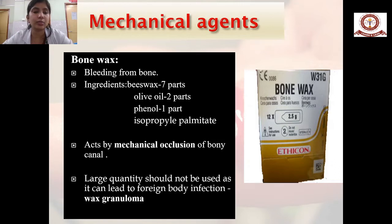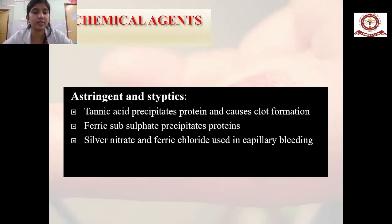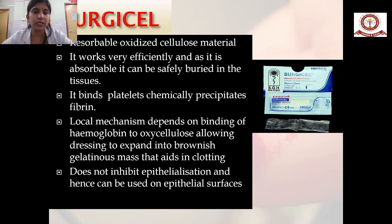Bone wax arrests bleeding from bone; its composition includes beeswax, olive oil, phenol, and isopropyl palmitate, and it acts by mechanical occlusion of the bony canal. Large quantities should not be used as it can lead to infection. Chemical astringents and styptics such as tannic acid precipitate protein and cause clot formation; ferric subsulfate, silver nitrate, and ferric chloride are used in capillary bleeding. Surgicel is a reabsorbable oxidized cellulose material that binds platelets chemically and precipitates fibrin, and can be safely buried in tissues.